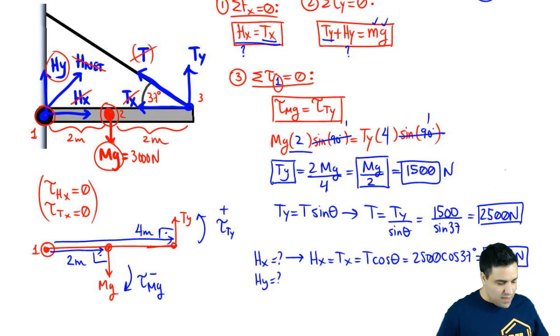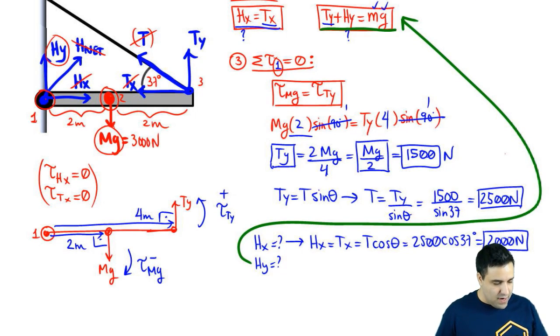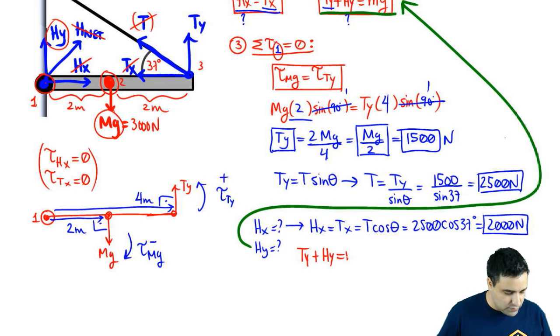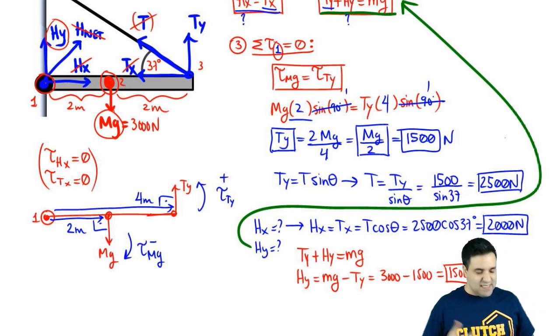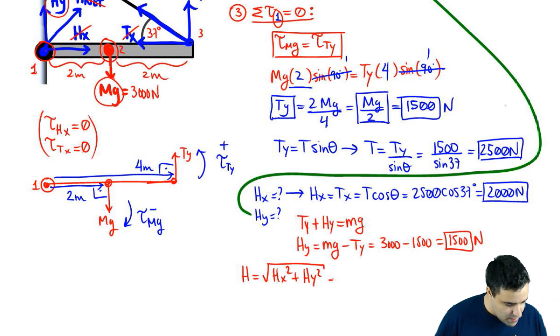That's good. Now all I got to do is find Hy, and if you look around, you will see that there's an Hy equation right here. And now that I know Ty and I know Mg, I'm going to be able to find Hy. So no need to write a new equation. We already got that. So Ty plus Hy equals Mg. So Hy is Mg minus Ty. Mg is 3,000. Ty is 1,500. So Hy is 1,500. This shouldn't be surprising that Hy is 1,500. Same thing as Ty. Ty was holding half of the Mg, so Hy had to hold the other half of the Mg.